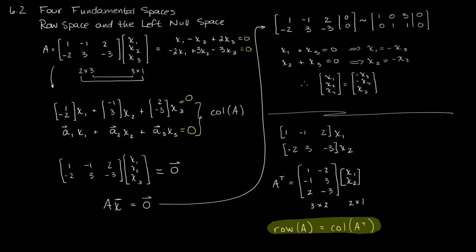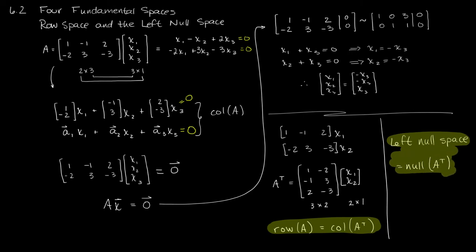The other thing is that what we call the left row space, sorry, the left null space, is just the null space of A transpose. So it's got kind of a fancy name, but it's exactly the same thing. So that's my other major result for this video. This is the other thing I wanted to be able to talk about.